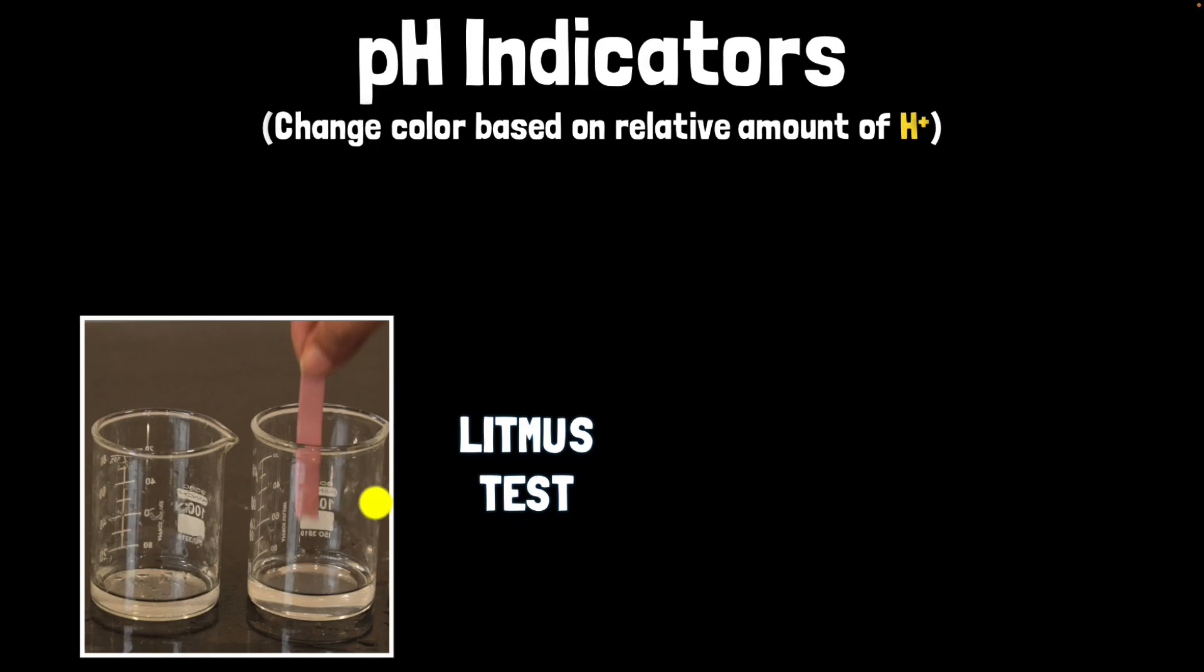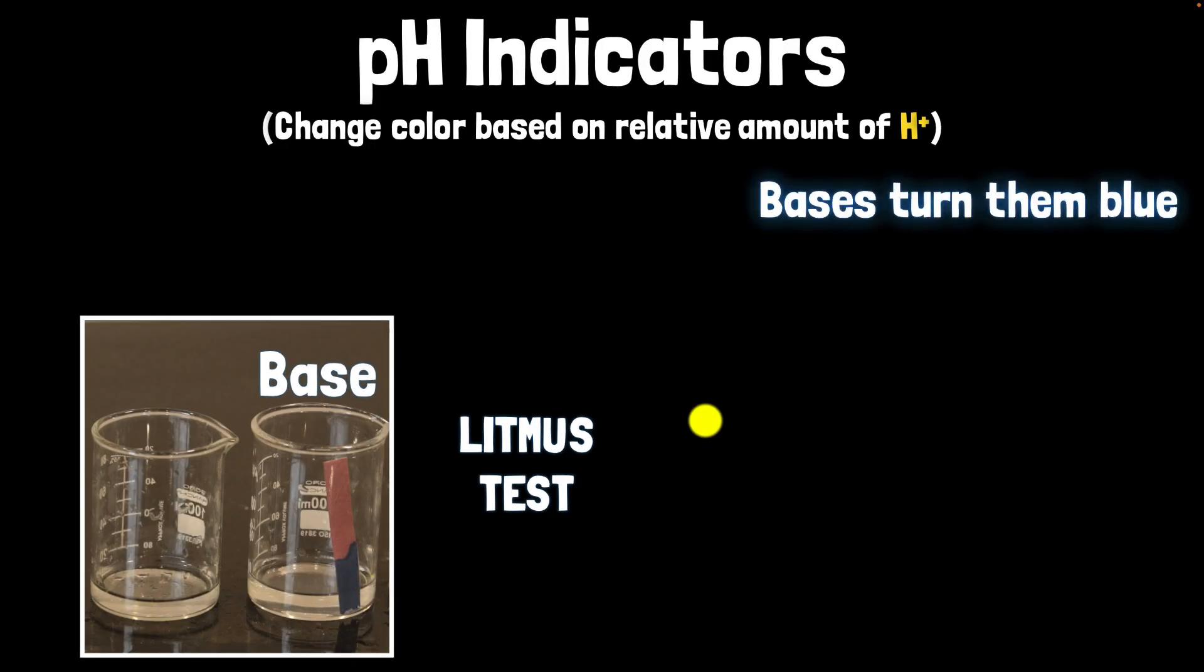For example, the compounds in the red litmus paper are already in their acidic form. So once you dip it in a solution, if it stays red, then the solution is either acidic or neutral. But if it turns blue, we know that the solution must be basic. So let's see what happens when I dip over here. Hey, it turned blue. Because it turned blue, I know that this solution must be basic. So look, bases usually change colors to blue.